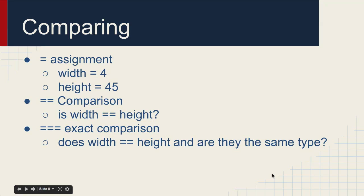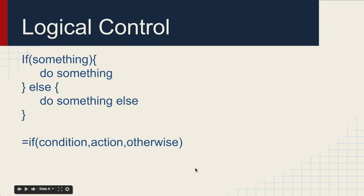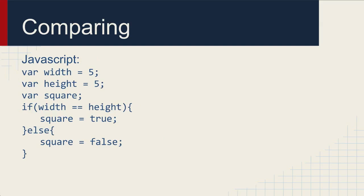Logical control - this is an if. We're familiar with ifs from spreadsheets. These work exactly the same. You say if some condition, then do something. Otherwise, or else, do something else. You may remember this from spreadsheets as if condition action otherwise. This is exactly the same thing, but this breaks it out a little bit differently and gives you a little bit more control. Here we can see how comparison works in JavaScript. We declare three variables width and height and give them initial values of 5. Then we compare them. We say if width is the same as height, then square is true. Otherwise square is false. And this is how an if works. This should be pretty familiar from your work with spreadsheet functions.